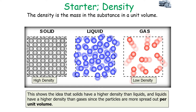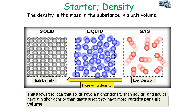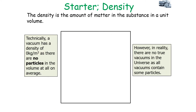You could also say that solids have a higher density because the particles are closer together per unit volume. So we note that gas has a low density, then liquid, then solid. Technically, a vacuum has a density of 0 kilograms per metres cubed as there are no particles in the volume at all on average.